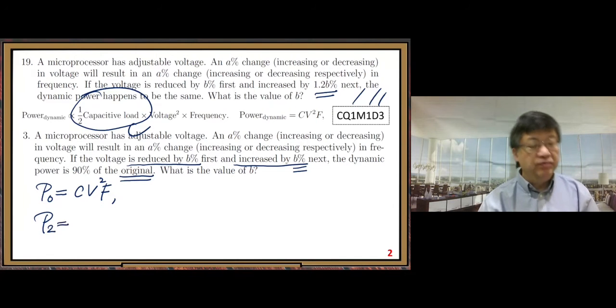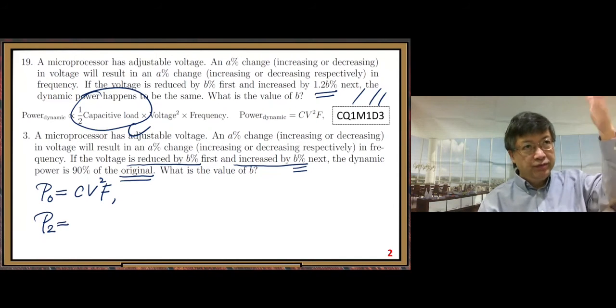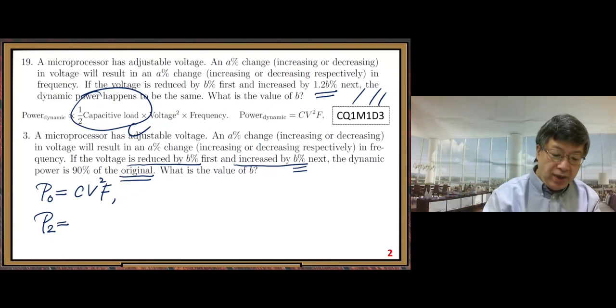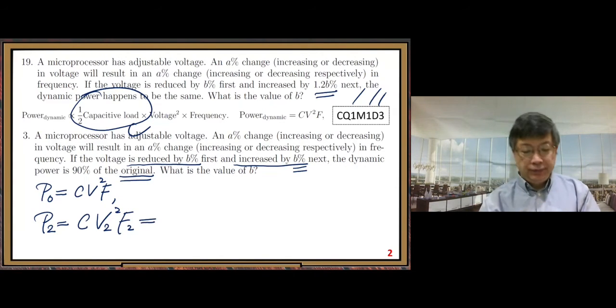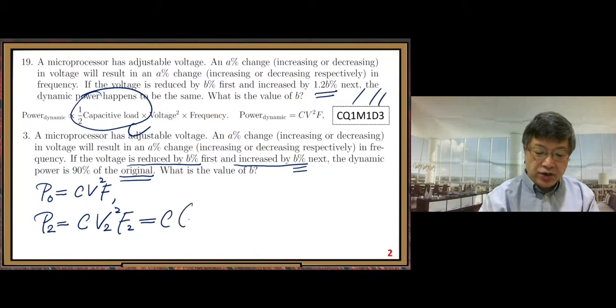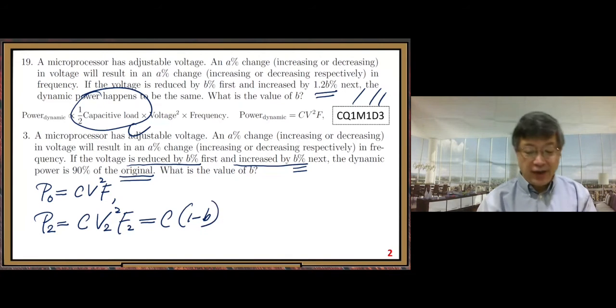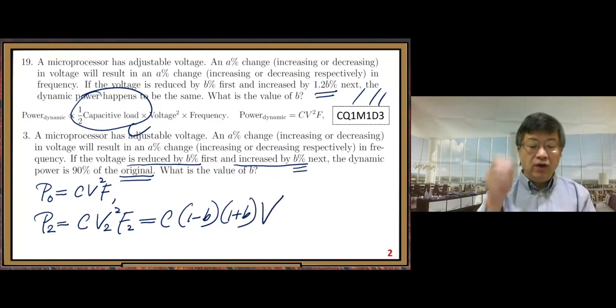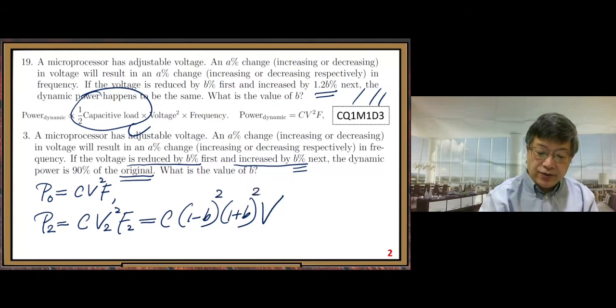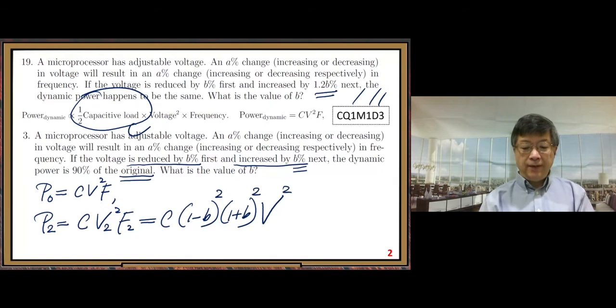If I write the formula, we can write this way. P2 equals C times V2 squared and F2. V2, based on the given condition, 1 minus B, B percent. For convenience, we can drop that percent. And increase B percent from original V. Remember, we need to square it. So square, square, square.